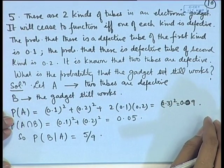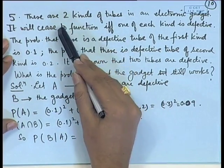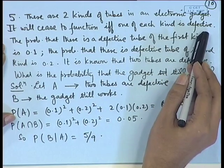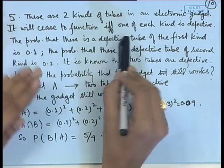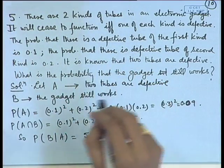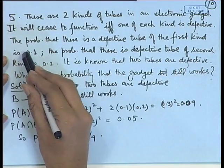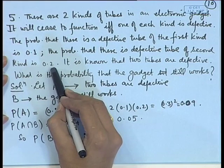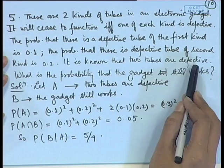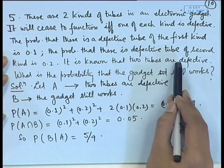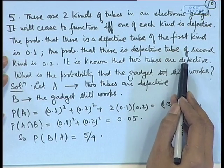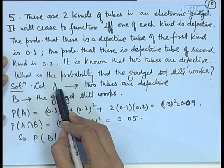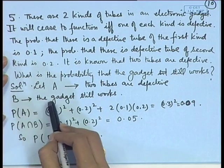Let us look at further applications of conditional probability. There are two kinds of tubes in an electronic gadget. It will cease to function if and only if at least one of each kind is defective. The probability that there is a defective tube of the first kind is 0.1, and the probability that there is a defective tube of the second kind is 0.2. It is known that two tubes are defective — both could be first kind, both second kind, or one of each. What is the probability that the gadget is still working?